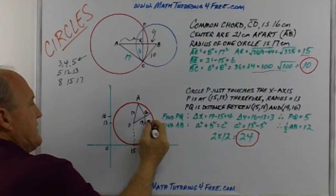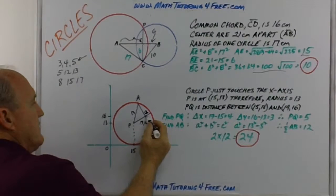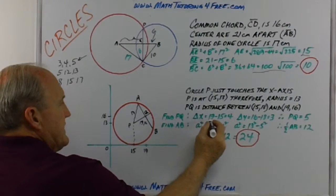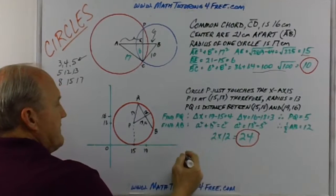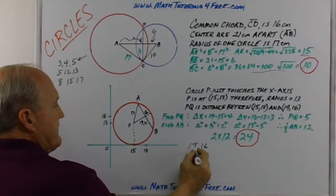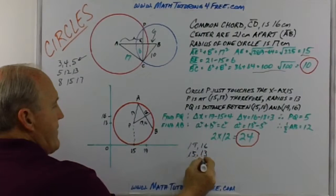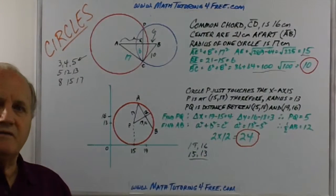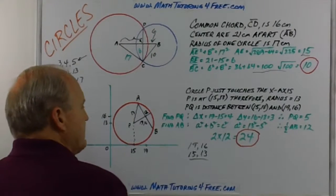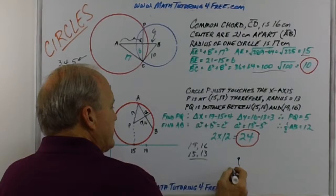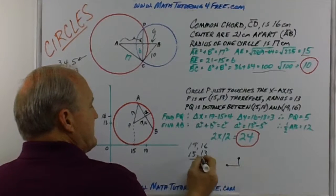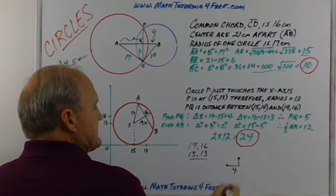We know that this leg we can find the difference because it's between the points (19, 16) and (15, 13). We think about the distance formula, or we think, I've got a right triangle and I know this point. The x-distance is from 19 to 15, so that says this side is 4. The y-distance is from 16 down to 13, so we know this is 3.